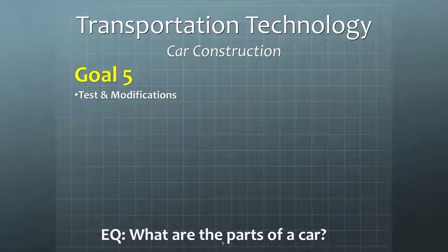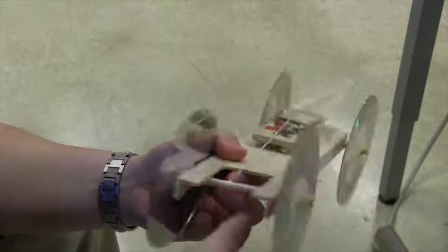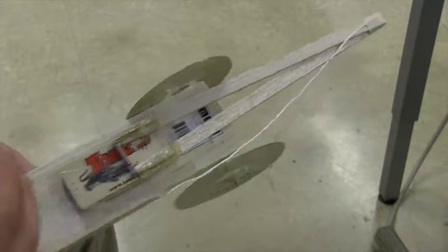Now we're ready to start the process of testing our mousetrap car. We have the aglet on the end, and we have the string attached to the front of the extension arms.